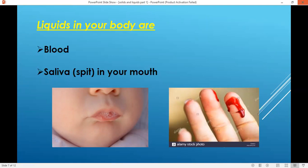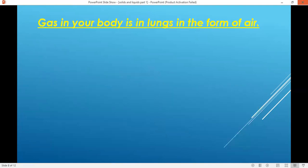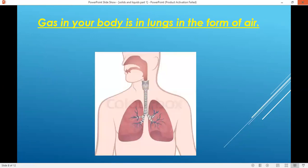While the blood running in our veins is the example of liquid, gas in your body is in lungs in the form of air. Look at this picture, you can see that there are lungs and when we breathe in, then air from our nose or mouth goes down in the lungs.